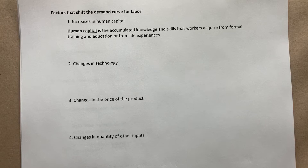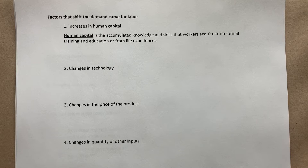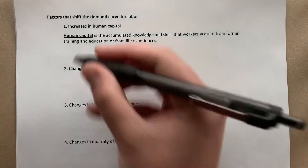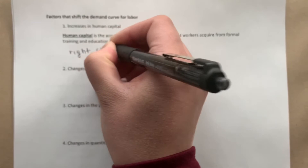Now we're going to go over factors that shift the market demand curve for labor, similar to what we covered in Chapter 3. These include increases in human capital, changes in technology, changes in the price of a product, changes in the quantity of other inputs, and changes in the number of firms in the market. Human capital is the accumulated knowledge and skills workers acquire from formal training, education, or life experiences. Better workers produce more, which increases their MRP and increases the demand for labor — shifting the labor demand curve to the right.